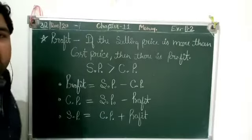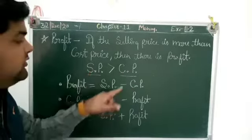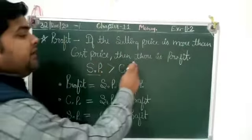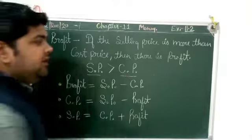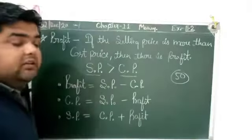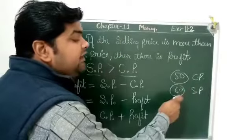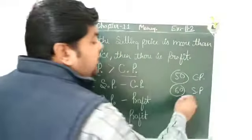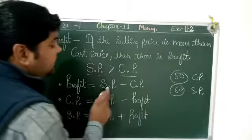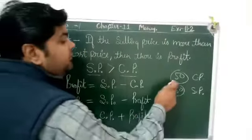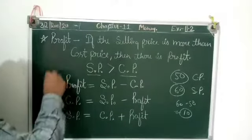When we add overhead charges to the cost, that new total is called CP. Now, profit occurs when SP is bigger than CP — if the selling price is more than the cost price, there will be profit. For example, CP is 50 rupees and SP is 60 rupees. He bought for 50 and sold for 60, so the profit formula is: Profit = SP minus CP, which gives 10 rupees profit.